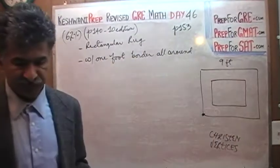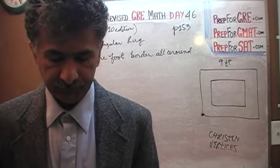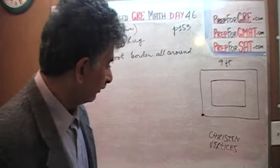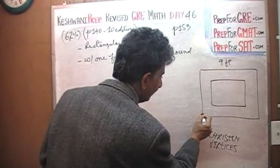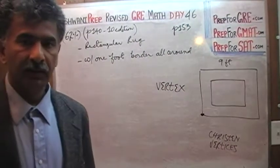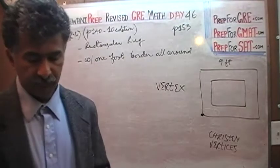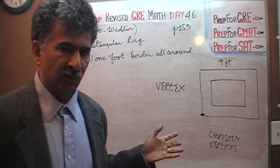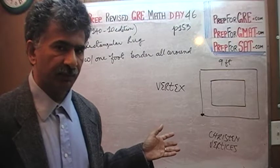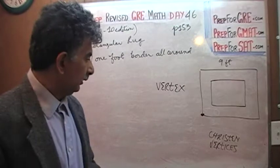Let's christen these vertices — 'christen' simply means to name something; it literally means to baptize somebody, but metaphorically it means to give something a name. In the language of mathematics, a corner of a figure is called a vertex, and the plural is vertices. If you don't know what vertices are, it might cause a problem even if you can solve the math.